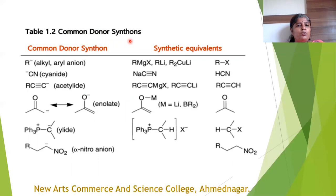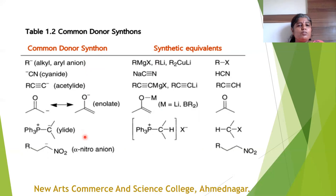This table includes donor synthones. Donor synthones have a negative charge on the carbon. Donor synthones are mostly obtained from organometallic reagents — for example, Grignard reagents, organolithium compounds, Gilman's reagent, and Wittig reagents. All donor synthones can be obtained from organometallic reagents, and those reagents are prepared from a metal plus an organic molecule.